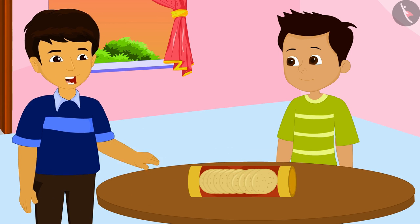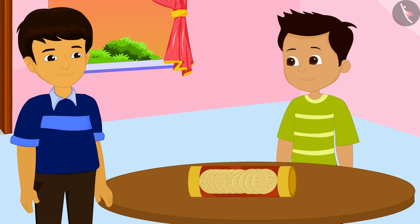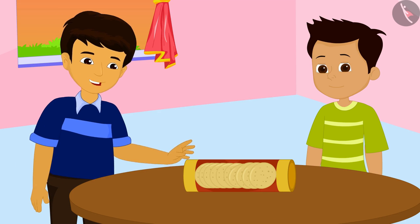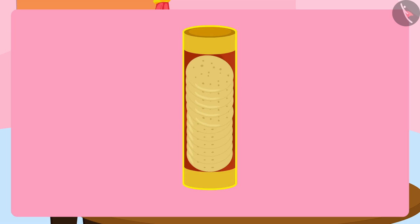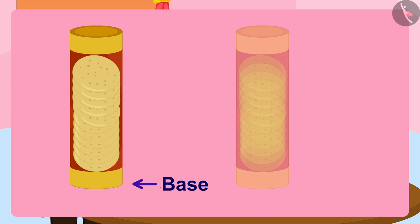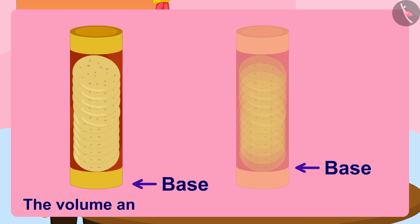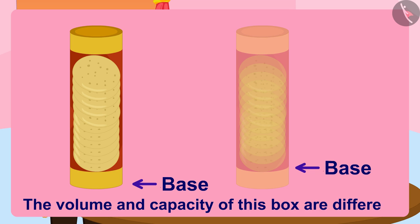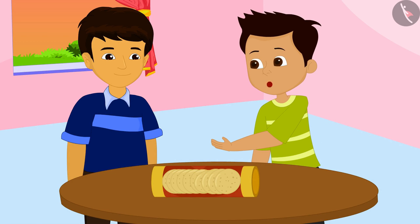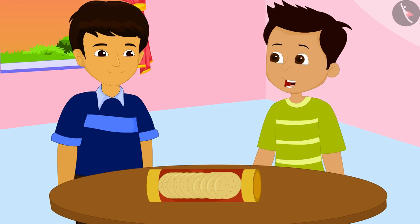Look, nowadays these chips are being sold in cylinder-shaped boxes. These boxes look so big, but upon opening them you see that they are fooling customers. When you look at the box from outside, the base appears here, however if you look inside the box, the base appears at a higher level. This means the volume and capacity of the box are different.